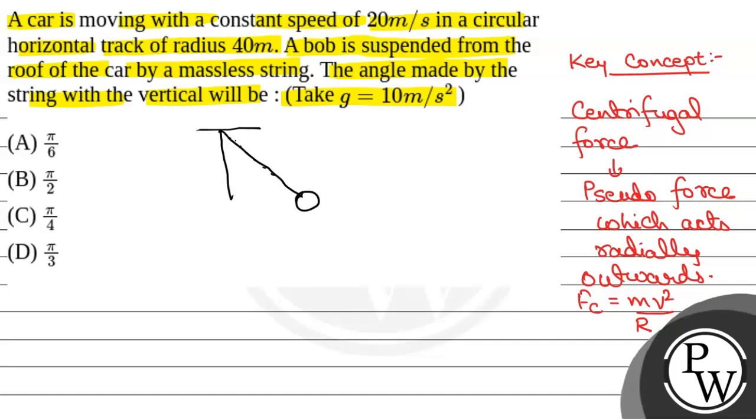And this is the bob. So this angle will be theta. Now, in this string, tension will act, and here centrifugal force will act, mv squared by r, because the car is in circular motion.